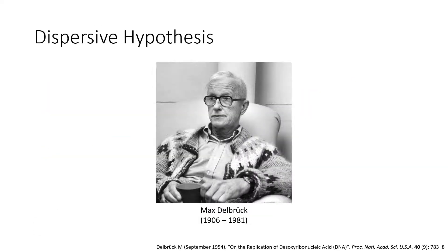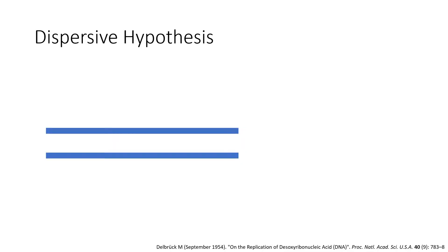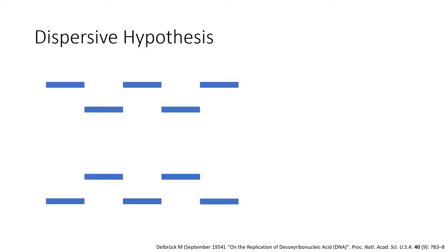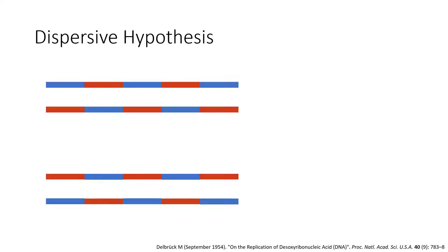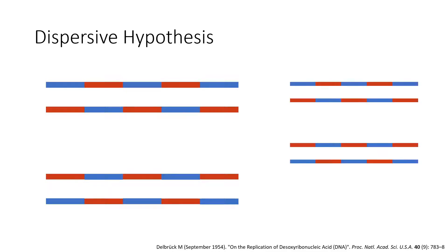The dispersive hypothesis was raised in 1954 by Max Delbrück. In this hypothesis, the parental DNA molecule is broken into small fragments which eliminates the problem of excessive winding. The fragments are used as templates for DNA synthesis. In the dispersive hypothesis, the daughter DNA molecules have distinct segments of DNA which alternate between parental origin and newly synthesized.